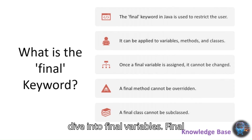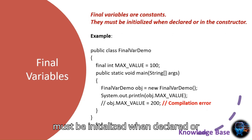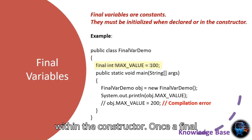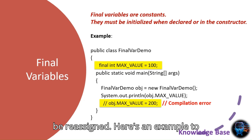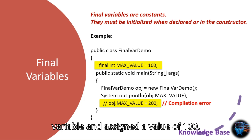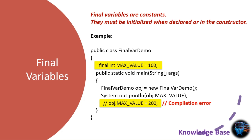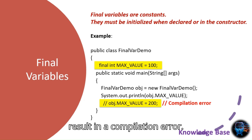Now let's dive into final variables. Final variables are essentially constants. They must be initialized when declared or within the constructor. Once a final variable is assigned a value, it cannot be reassigned. Here's an example to illustrate this. In this example, max_value is declared as a final variable and assigned a value of 100. Any attempt to change this value will result in a compilation error.